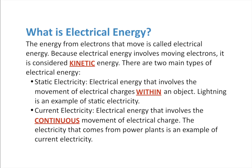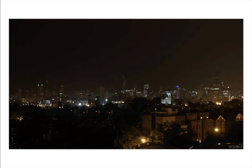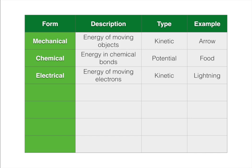The other type is current electricity — the electrical energy that involves the continuous movement of electrical charge. The electrons just keep moving and it creates a current, like a current of water. The electricity that comes from power plants is a great example of current electricity, or any time you plug something into a wall socket. Lightning is a good example. Those lightning bolts all struck these three high-rises in Chicago at the same time — that is static electricity. Electrical energy is the energy of moving electrons; it is kinetic energy.